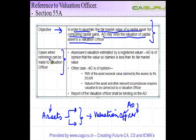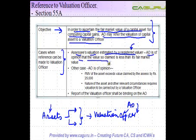The first case when a reference can be made to the valuation officer is when the assessee's valuation is estimated by a registered valuer. Even if the assessee produces a valuation certificate from a registered valuer, if the AO is of the opinion that the value so claimed is less than the fair market value, he can refer the matter to the valuation officer to verify whether the report is correct or not.